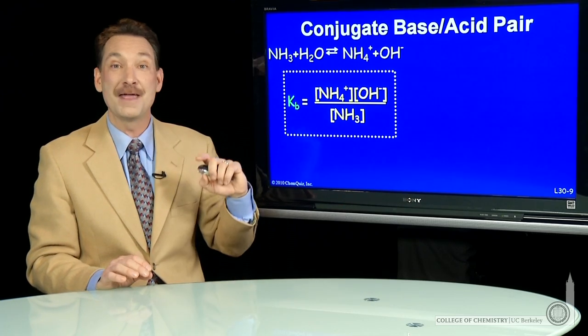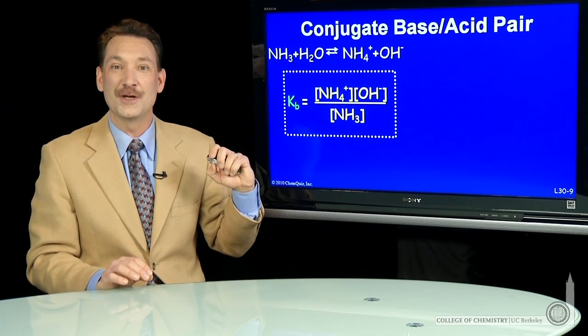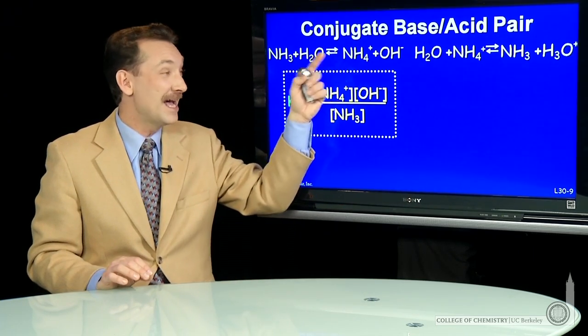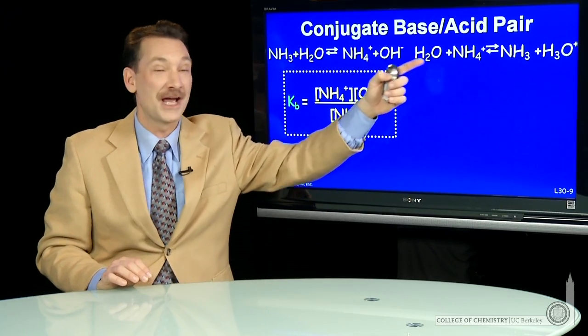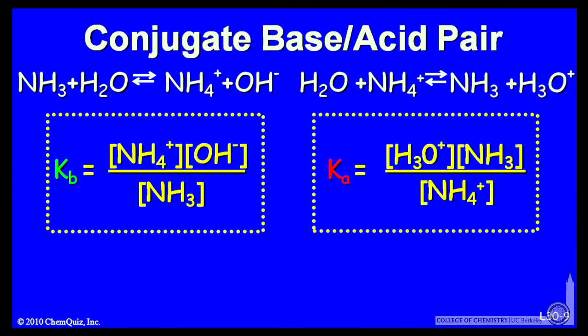So here I have Kb for NH3, the weak base. The weak acid produced NH4 plus can also react with water. And I could write a K for that, a Ka.